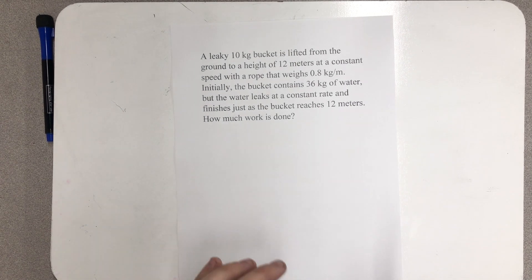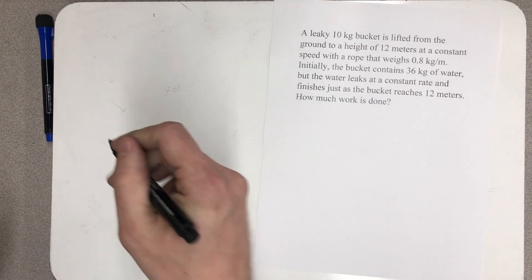A leaky 10 kilogram bucket is lifted from the ground to a height of 12 meters at a constant speed with a rope that weighs 0.8 kilograms per meter. Initially the bucket contains 36 kilograms of water, but the water leaks at a constant rate and finishes just as the bucket reaches 12 meters. How much work is done?